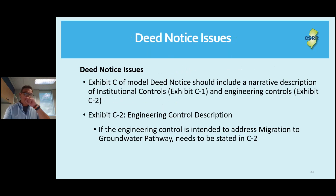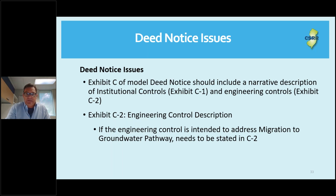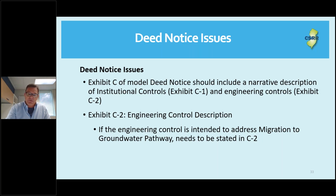A number of applications that had a deed notice associated with them didn't accurately describe the purpose of the engineering control. Exhibit C of the model deed notice should include a narrative description of the institutional control in C1 and a description of the engineering control in C2. If your engineering control is intended to address the migration-to-groundwater pathway, it needs to say that. If it's intended to address inhalation or direct contact, it needs to say that. If both, it needs to say both.